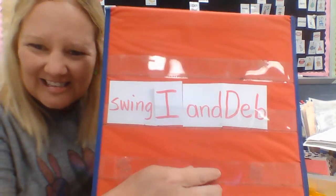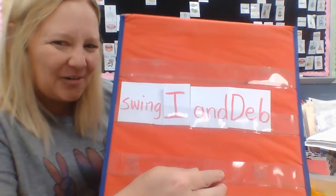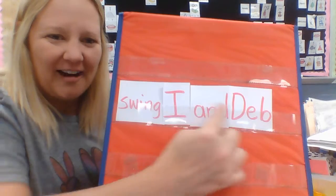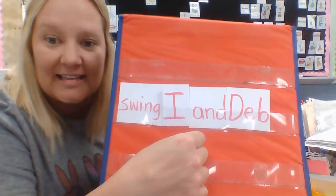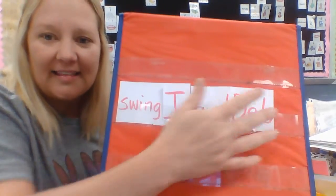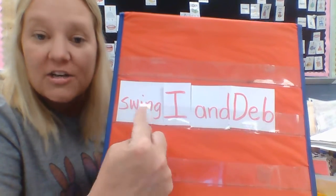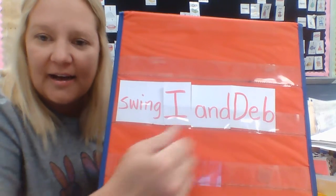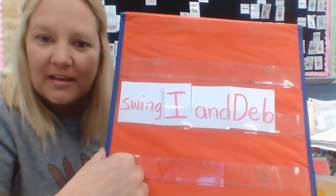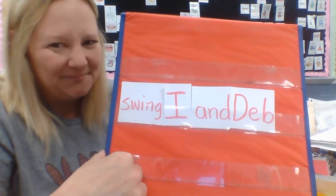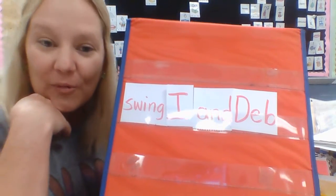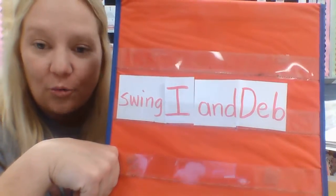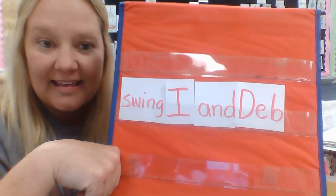So we have: swing, I, and, Deb. Does that make sense? Does that sound right? Does it look right? No, it does not. We have to put the words in the right order to make it make sense. If we kept it like this it would sound like: Swing. I. And. Deb. That doesn't make sense. So remember what we talked about — you have to put words in order to make a sentence.